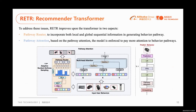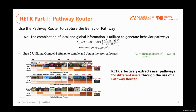Let me introduce our RATA Recommender Transformers. To address these issues, RATA improves on the Transformers in two aspects. First is the pathway router — it can incorporate both local and global sequential information in generating behavior pathways. Then the pathway attention — based on it, the model is enforced to pay more attention to the behavior pathways.